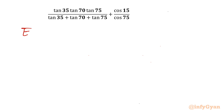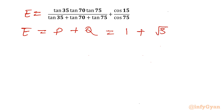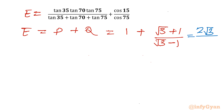Now we can write the final expression E equals P plus Q equals 1 plus (root 3 plus 1) over (root 3 minus 1). Taking LCM, the numerator becomes (root 3 minus 1) plus (root 3 plus 1), which equals 2 root 3, and the denominator is root 3 minus 1.